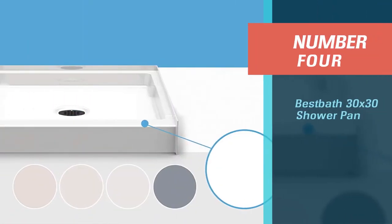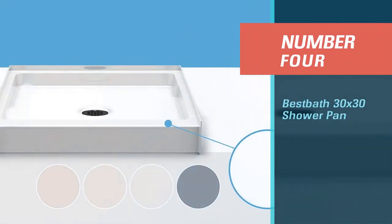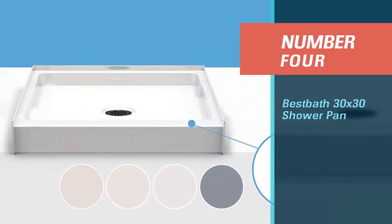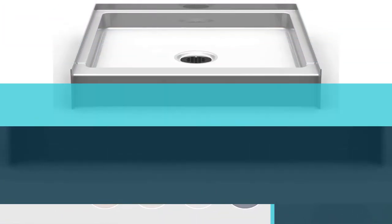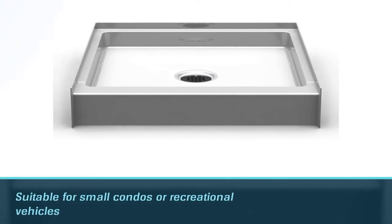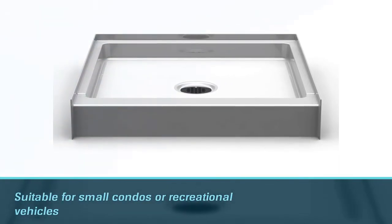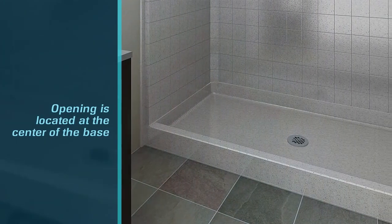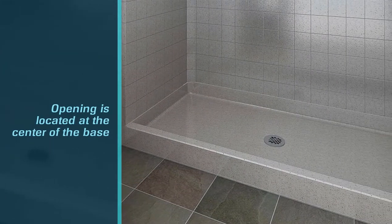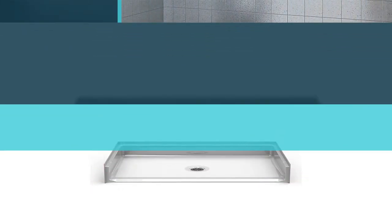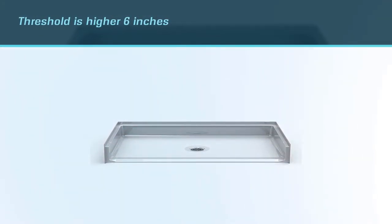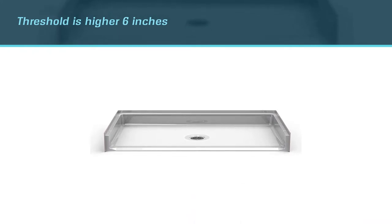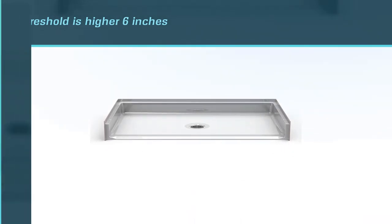Number four: Best Bath 30x30 Shower Pan. This square base is tiny enough to fit most bathroom spaces and should even be suitable for small condos or recreational vehicles. The opening is located at the center of the base and the drain plate is included in the package. The threshold is higher, 6 inches, than most other pans, preventing water overflow.